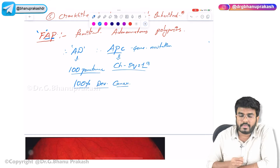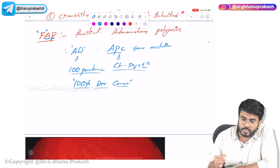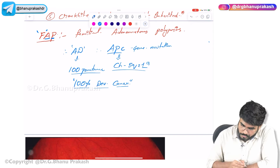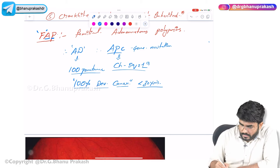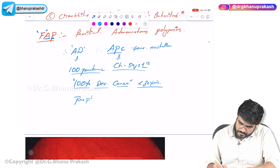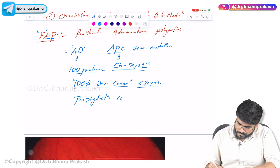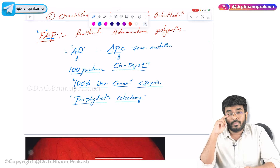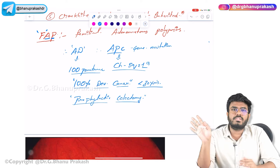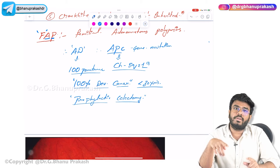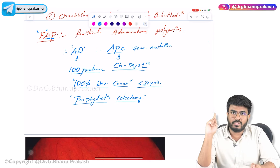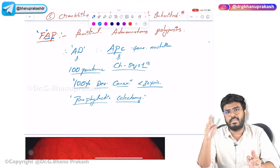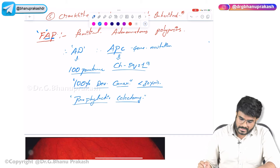Because there is 100% risk of cancer and cancer can develop before 30 years of age, we perform prophylactic colectomy. To establish the diagnosis of familial adenomatous polyposis, at least a minimum of 100 polyps should be present in the colon region. If you identify this condition and family history is positive, prophylactic colectomy must be performed — otherwise the patient will develop cancer.